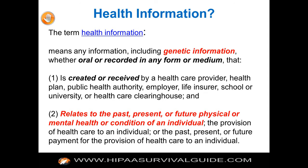Health information is defined in a broad fashion compared to PHI. Individually identifiable health information is information that is a subset of health information, created or received by a healthcare provider, health plan, employer, or healthcare clearinghouse. Now we're narrowing down the parties that can have individually identifiable information.